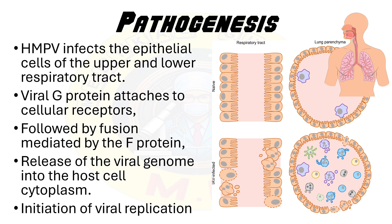Moving on to the pathogenesis, HMPV infects the epithelial cells of the upper and lower respiratory tract. The infection begins when the viral G protein attaches to cellular receptors, followed by fusion mediated by the F protein, leading to the release of the viral genome into the host cell cytoplasm. This initiates a cascade of viral replication and protein synthesis, culminating in the assembly of new virions and their release to infect neighboring cells.